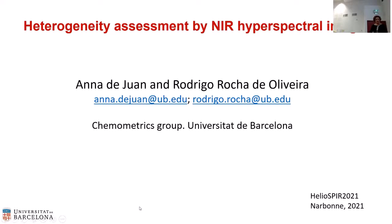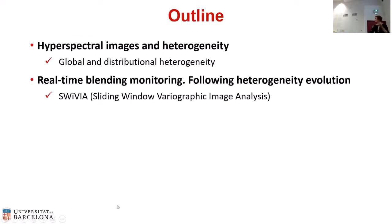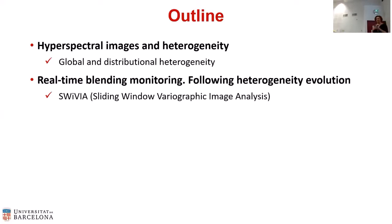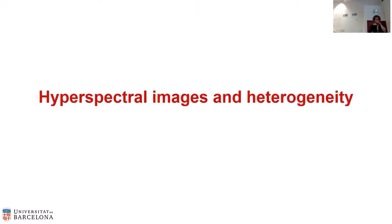The outline of this talk will be, first of all, about trying to explain the connection between the imaging measurement and the heterogeneity concept. I want to describe what we interpret as heterogeneity, paying attention to different aspects, because heterogeneity is a complex concept and we have to look at different things to define it properly. Once we explain some indices that help us understand the different sides of heterogeneity, I will explain how we can use these indices to monitor in real time blending processes.